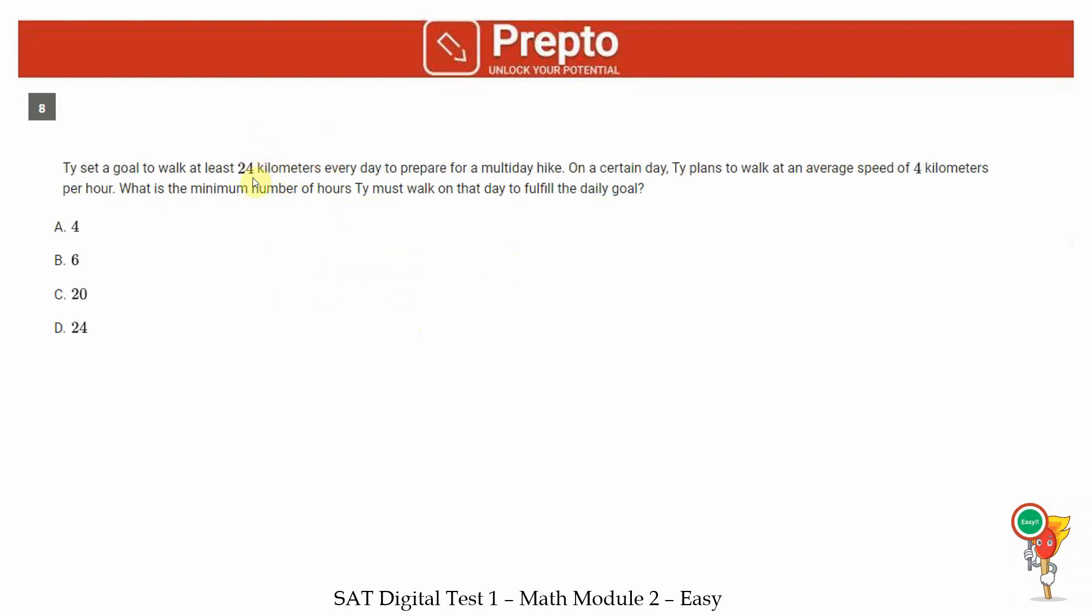Question eighth, Thais set a goal to walk at least 24 kilometers every day to prepare for a multi-day hike. On a certain day, he plans to walk at an average speed of 4 kilometers per hour. What is the minimum number of hours Thais must walk on that day to fulfill the daily goal? If he has to walk 24 and per hour he is managing 4 on average, that means he needs to walk 6 hours at least, 24 divided by 4. Answer is option B, which is 6.